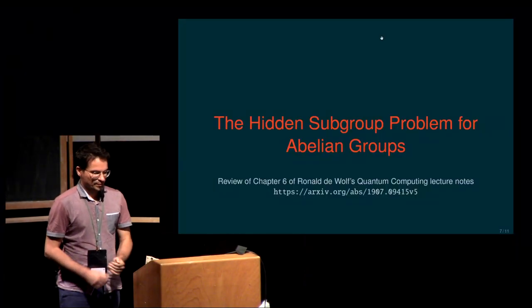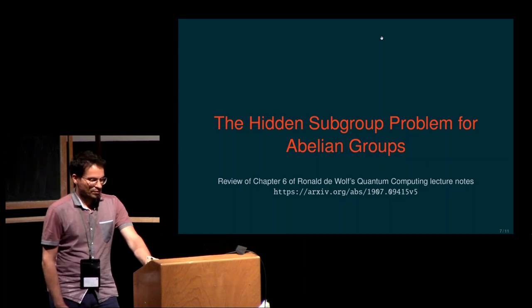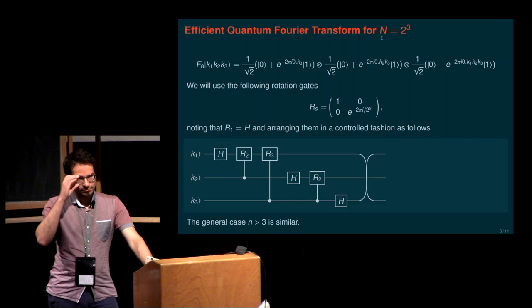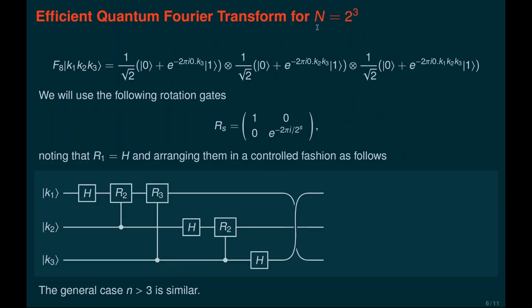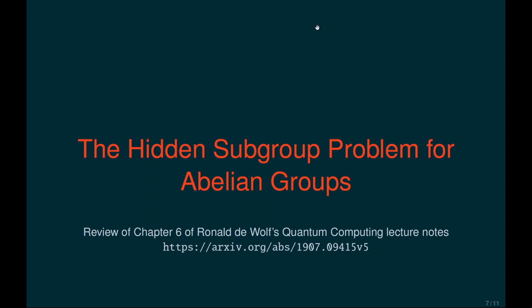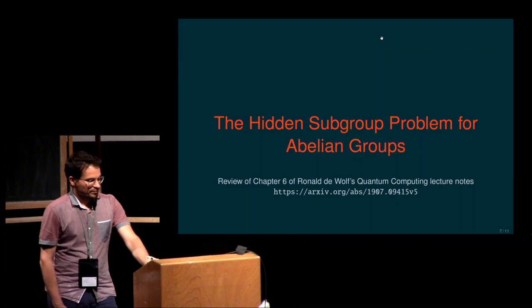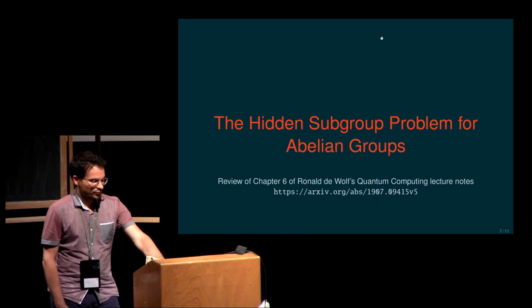This was the first part about quantum Fourier transforms. I'll now move to the second part, which is a review of the hidden subgroup problem for abelian groups. Once again I am following the lecture notes of Ronald DeWolf - no need to invent the wheel. If you want more background material, you can head to the archive and look at Ronald's lecture notes.